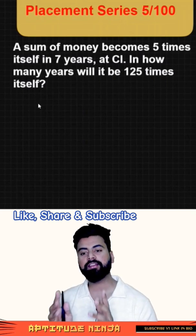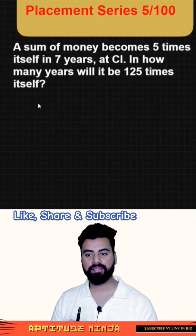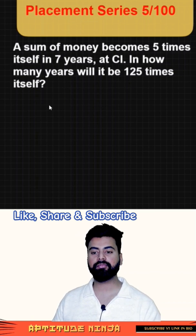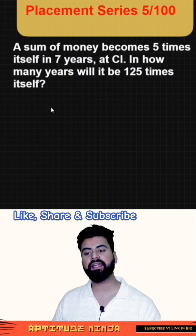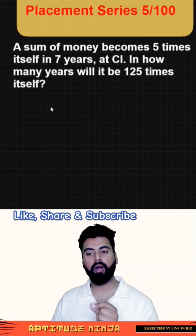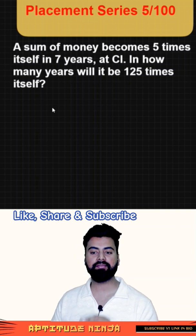Let us discuss a very interesting question which has been asked very often in recent placement examinations. The question reads: a sum of money becomes 5 times itself in 7 years at compound interest. In how many years will it be 125 times itself?